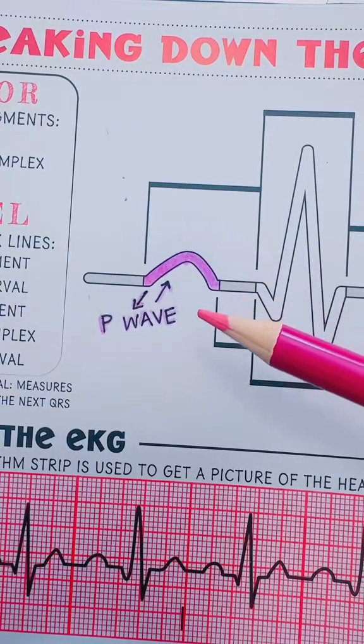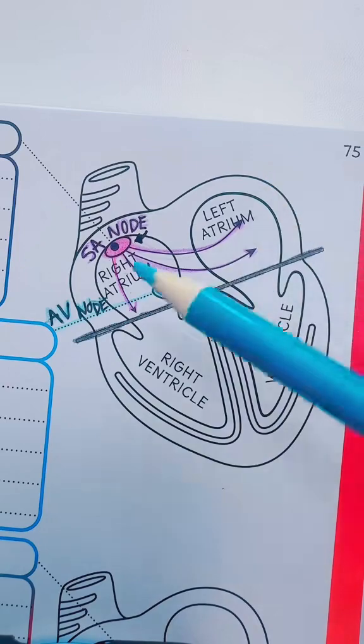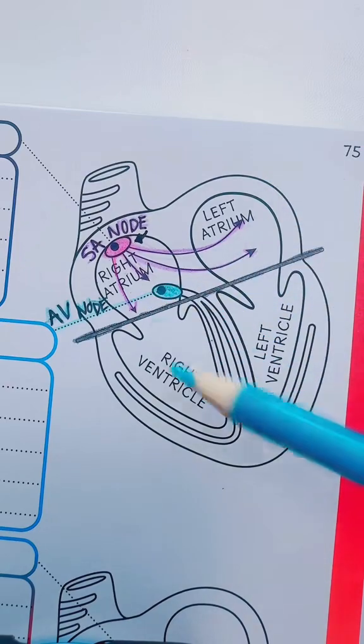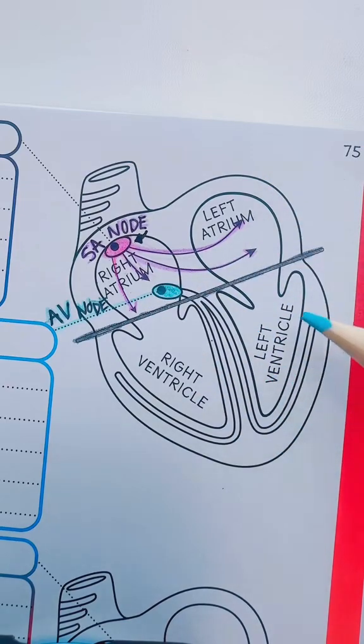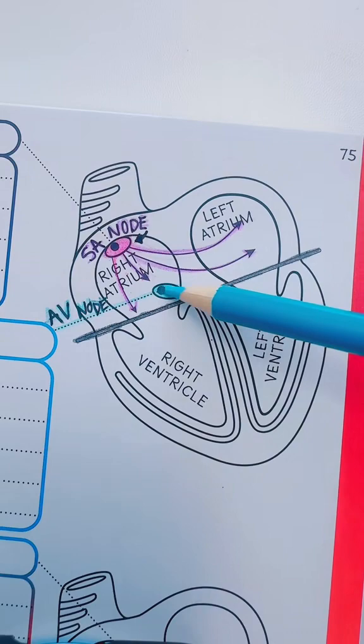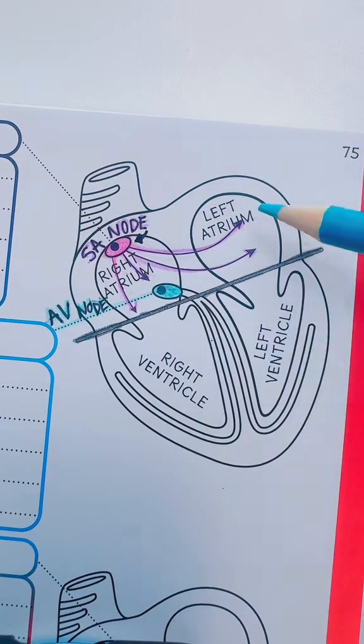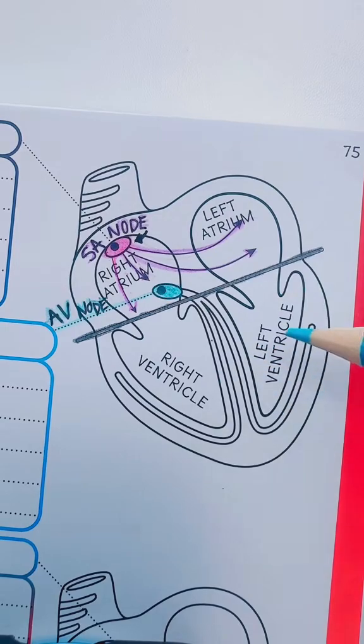The atria contracting creates our first little wave known as the P wave. The contraction of these atria is actually pushing blood into the ventricles, but the ventricles don't know to squeeze or contract yet because the electricity is still holding here in this AV node, and it holds electricity because it's giving the atria time to empty the blood into the ventricles.